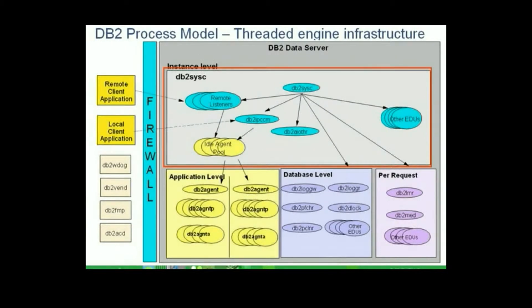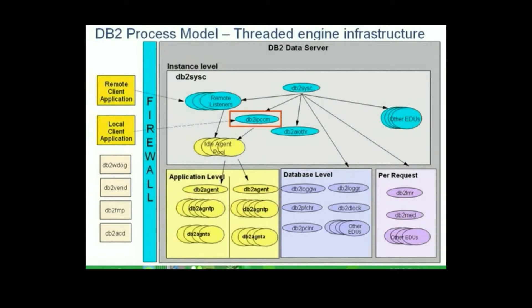Going back to the presentation slide, we can see that within the DB2CC process there are many threads represented by ellipses. The main thread happens to also be called DB2CC. This thread spawns other threads, each used for different purposes. For example, DB2IPCCM is used to listen for connections from local client applications. Once a connection request comes in, it would spawn or invoke an agent from the idle agent pool. This agent, called DB2 agent, would take care of handling this application — you can think of an agent as a little worker performing DB2 operations on behalf of the client.